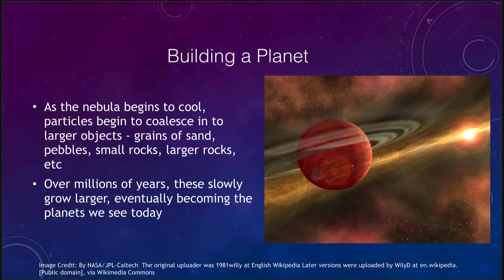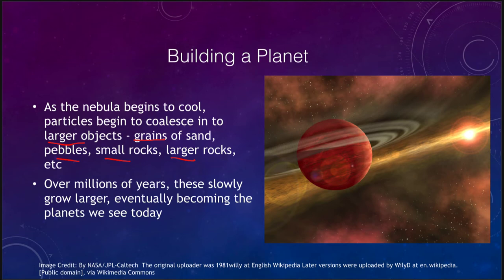Let's look at building a planet. First, the nebula would begin to cool — the hotter it is, the fewer objects are able to form solid particles. So the first things to form would have been metallic and rocky materials close to the star. Particles begin coalescing into larger objects, starting with simple grains, pebbles, smaller rocks, larger rocks, eventually becoming what we call planetesimals. In the outer part of the solar system, more icy material formed, with icy chunks coalescing similarly into larger bodies.